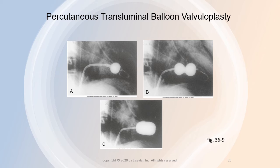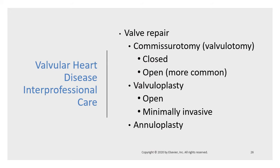The Sapien transcatheter heart valve, or THV, is used for select patients with aortic stenosis. The THV is inserted through the femoral artery and moved to the heart, then released and expanded with a balloon at the location of the aortic valve. This procedure is limited to patients who are eligible for surgery but are at high risk for surgical complications, such as those with multiple comorbidities.